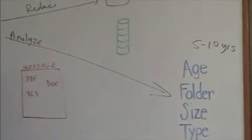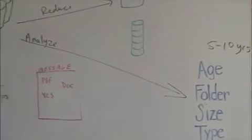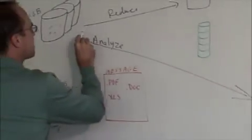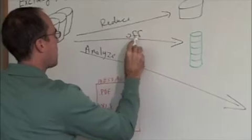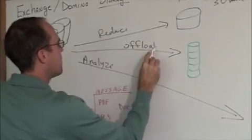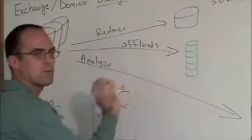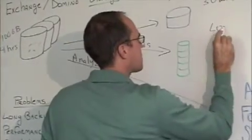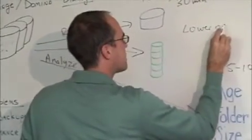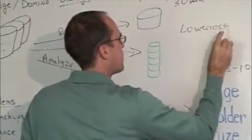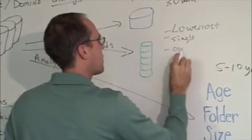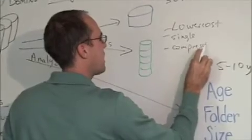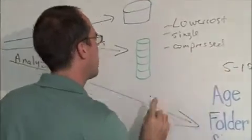So we're going to first analyze and then I'm going to introduce a concept to you called stubbing. What stubbing does is basically takes all those attachments and offloads them to some lower cost storage. This lower cost storage is basically single instance and it's compressed, and the beauty is because this is older data, you can keep this pretty much anywhere in your network.